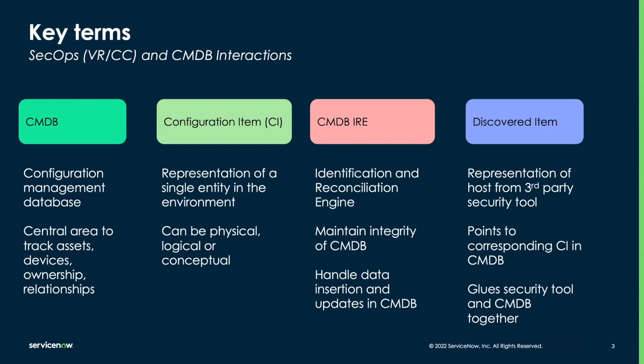Let's go over some key terms. CMDB is our configuration management database. Think of that as your central area where you store, track, and manage assets, devices, ownership, and relationship details. A configuration item, or what we call a CI, is a representation of a single entity in the environment. That may be something physical such as a server, something logical such as an instance of a database server, or something conceptual such as a relationship or a service.